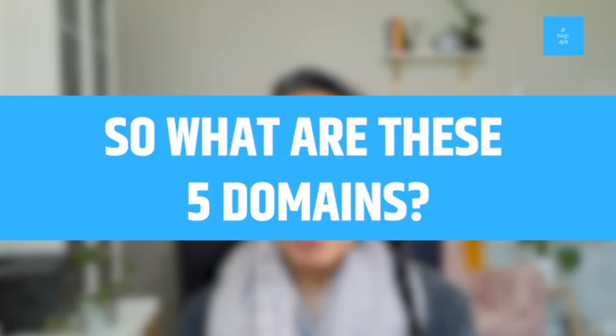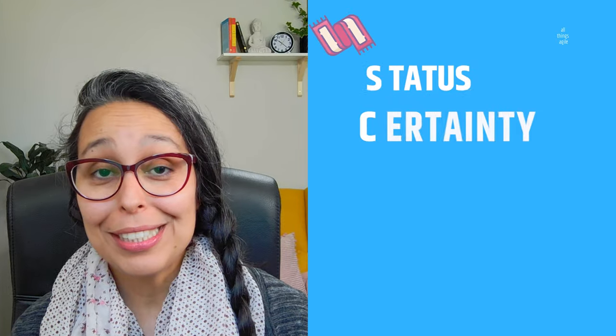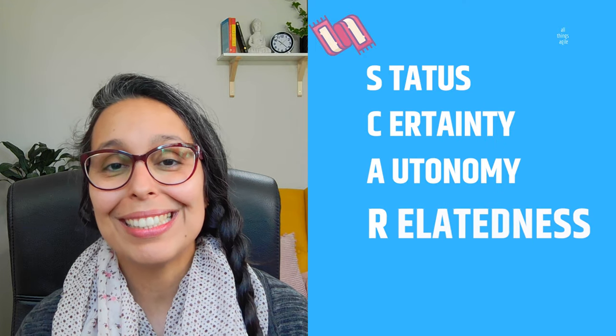He shows that through the use of SCARF, you can either spark or destroy the motivations of your employees. These five domains or dimensions can elicit a response of fear and threat from the person you're speaking to, or even a sense of safety and reward. The five dimensions are: status, certainty, autonomy, relatedness, and fairness.